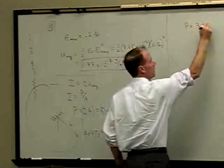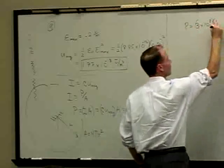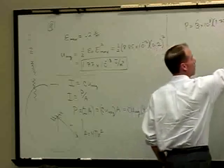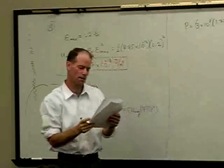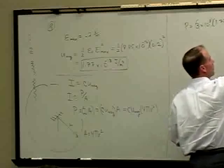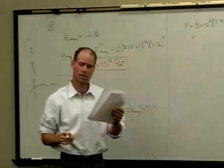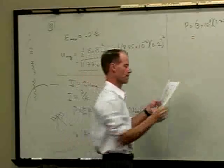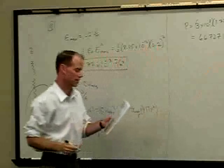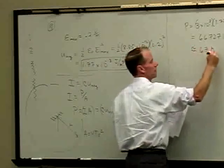So power equals C times U times 4 pi R squared. Power equals 3 times 10 to the 8 meters per second times the energy density times 4 pi times the radius squared. That comes down to about 66,727 watts, or approximately 67 kilowatts.